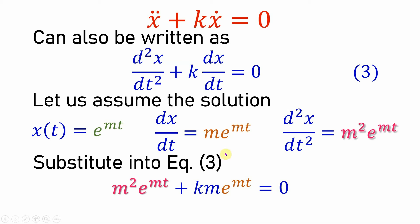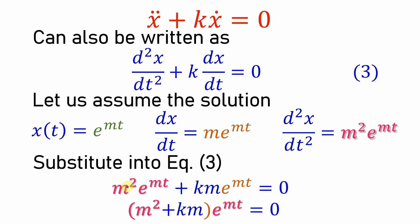Substituting into equation 3: the second derivative term becomes m²·e^(mt), and the first derivative term becomes k·m·e^(mt), all equal to zero — the same as equation 3 but with our assumed solution and its derivatives substituted. We can now factorize: e^(mt) comes out, leaving m² + km = 0.